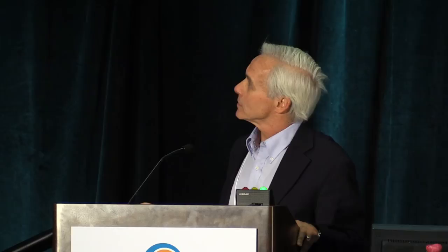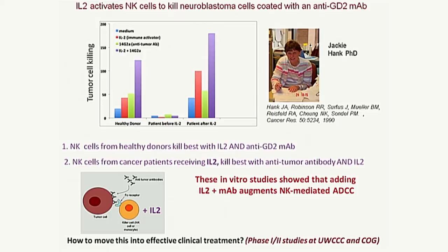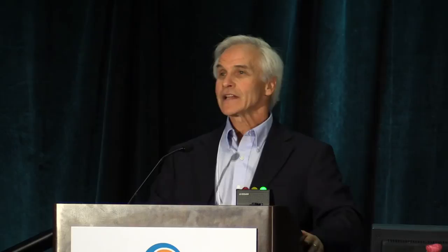Jackie Hank tested white cells and natural killer cells from healthy individuals against neuroblastoma cells we received from Bob Seger, showing that IL-2 and antibody together produced augmented ADCC — particularly when both were present simultaneously. However, when we took cells from patients with cancer, it was different. Cancer is immunosuppressive not only to T cells but to NK cells, and although patients have NK cells that function, they don't function as well as healthy donors.